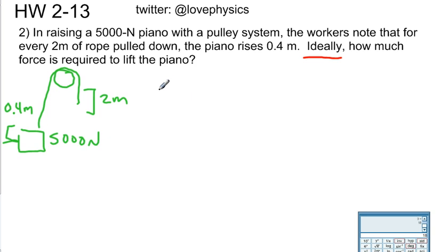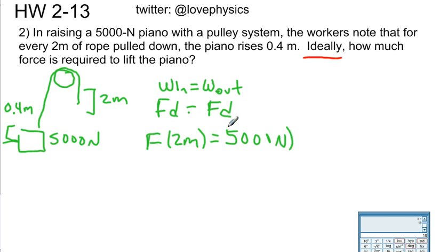So again, as in the previous problem, it's work in equals work out. So that's force times distance in equals force times distance out. So the force put in is the unknown, because we don't know how much it is. The distance is two meters. The force we get out is the force of the piano, which is 5,000 Newtons. And the distance we get out is 0.4 meters.